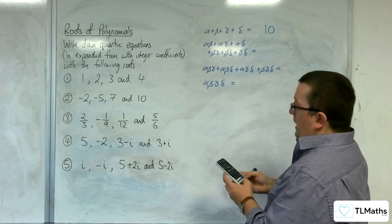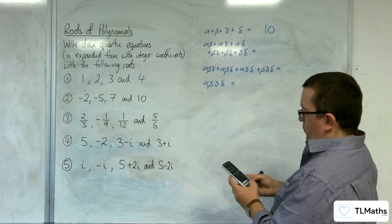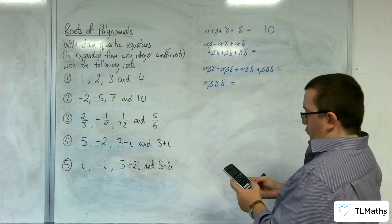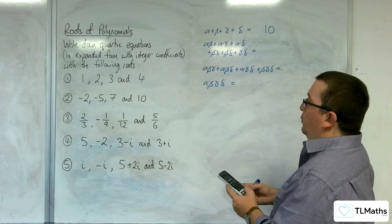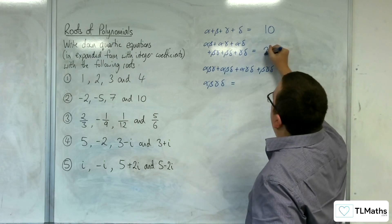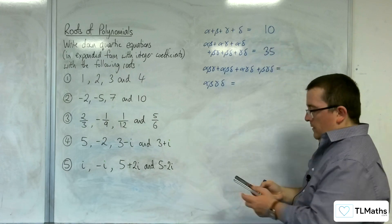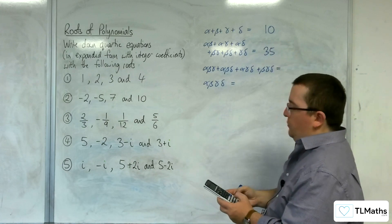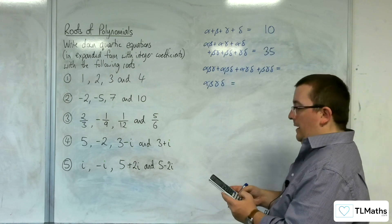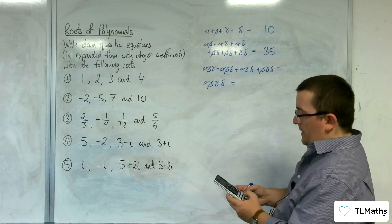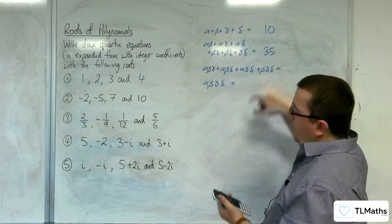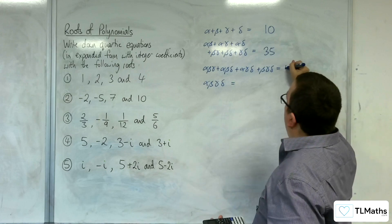Then we're going to have 1 times 2, plus 1 times 3, plus 1 times 4, plus 2 times 3, plus 2 times 4, plus 3 times 4. Then we're going to have 1 times 3 plus 1 times 4 plus 2 times 3 times 4 — that's what I'm doing here, plugging in — and I get 35.